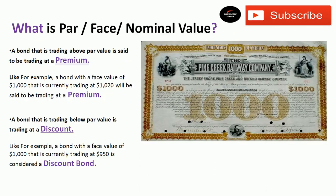Here's an example. As you can see on your screen, there is a picture of a bond and the amount of $1,000 is clearly visible on the face of the bond. This value is called face value, par value, or nominal value. This amount represents the money that bond issuers — like corporations or governments — promise to repay bondholders who purchase the bond at the maturity date.